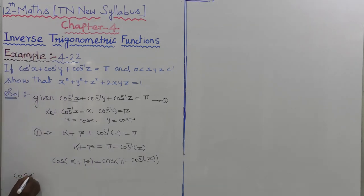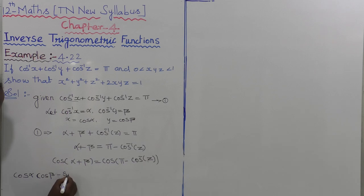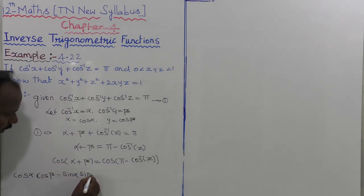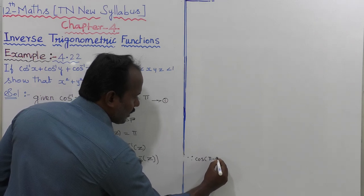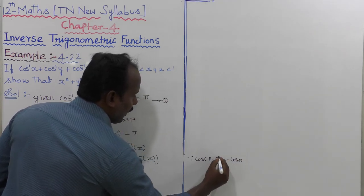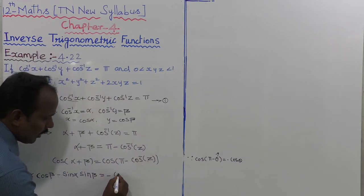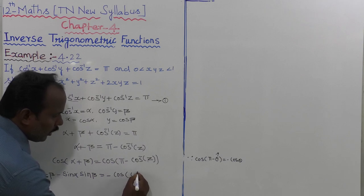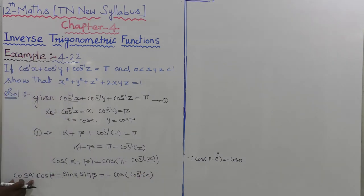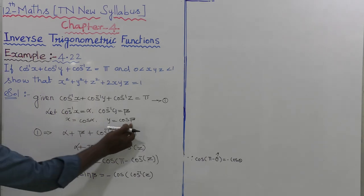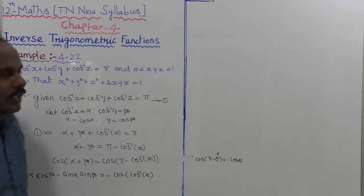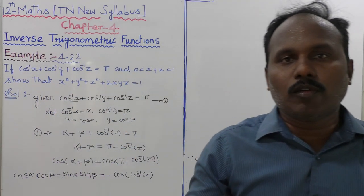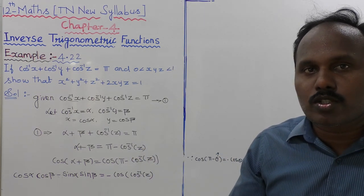Substituting: cos α = x and cos β = y. So the expression becomes xy − sin α · sin β = −z. Now sin α = √(1 − cos²α) = √(1 − x²), and similarly sin β = √(1 − y²).